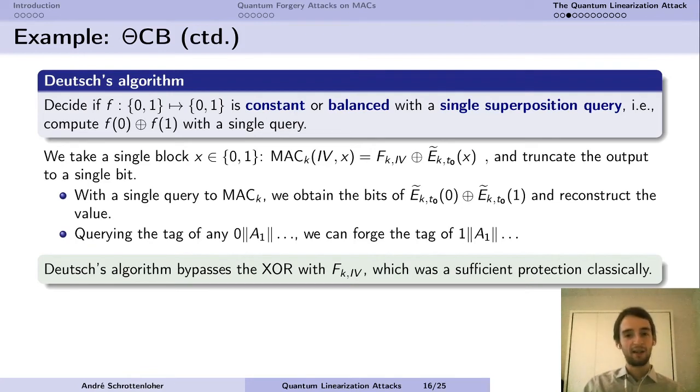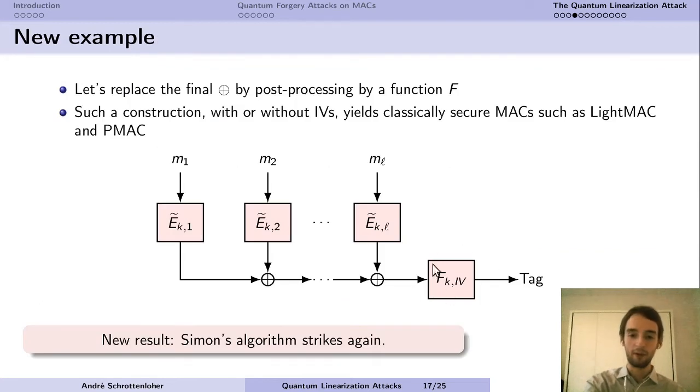Okay, so this is our first attack. Still, it's not the complete linearization attack. Let's try to make life even more difficult for our quantum adversary. And instead of just XORing with an IV-dependent value, we're going to post-compute with an IV-dependent function. So now we have independent tweakable blocks that just process our message blocks. We XOR everything and then we post-process with a function. And there, on this construction, which actually abstracts out many classically secure MACs, many parallel MACs such as LightMAC for example. So on this construction, Simon's algorithm can be used to make forgeries again.